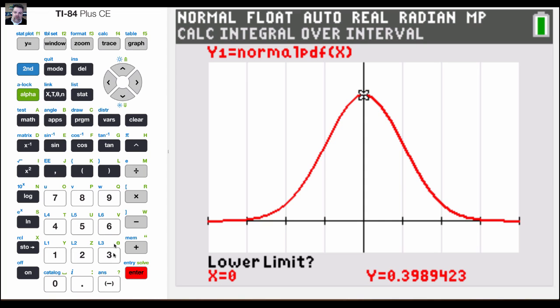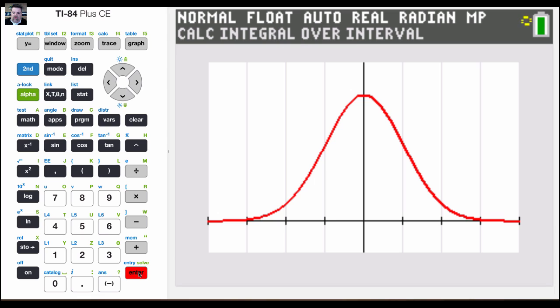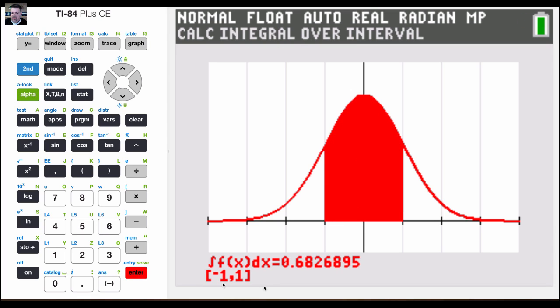If I evaluate from say negative 1 to positive 1, then based on the empirical rule, I should get about 68%. So the area under the curve is 0.6826.